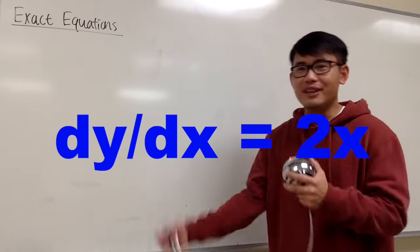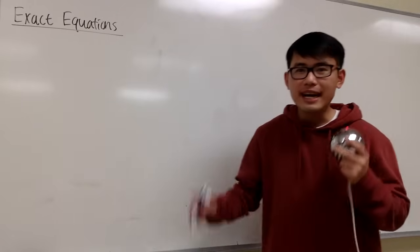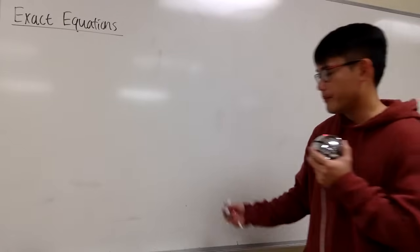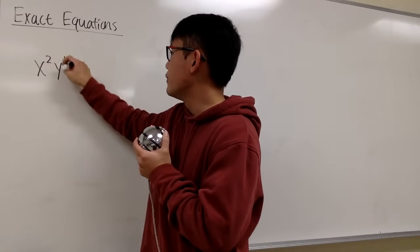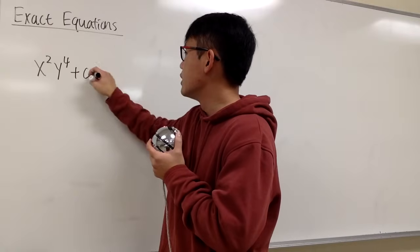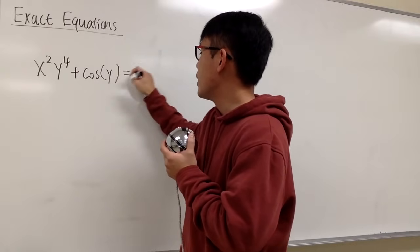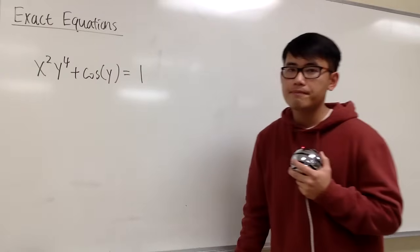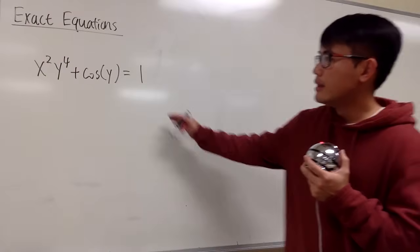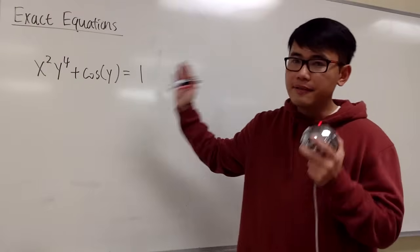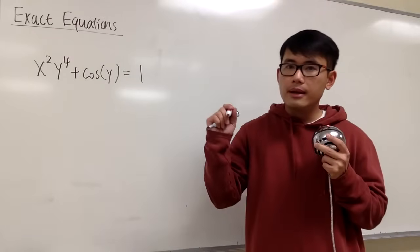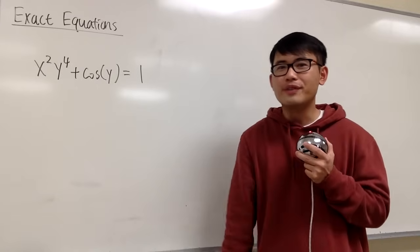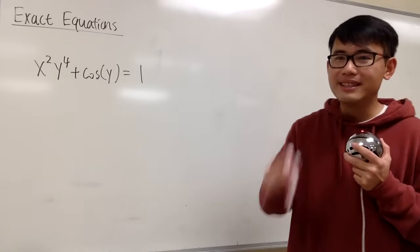And you should know how to solve that differential equation. However, what if the y is not isolated? Let me give you guys an example. Suppose we have x to the second power, y to the fourth power, and we add it with cosine of y. And let me tell you, this is equal to 1. The y is not isolated. And in fact, no matter what we do, we cannot isolate the y. But we can still get the dy/dx.